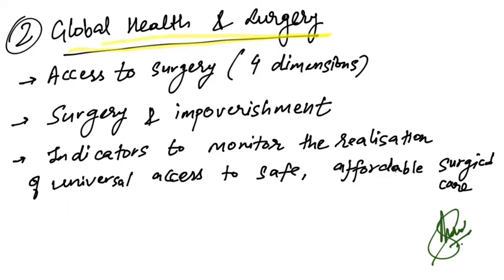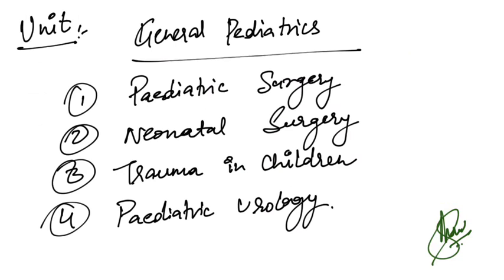Another new chapter is Global Health and Surgery, in which they have discussed access to surgery across four dimensions. One flowchart is given on surgery and impoverishment, and there are indicators to monitor the realization of universal access to safe, affordable surgical care. This is a small chapter but it is newly added.